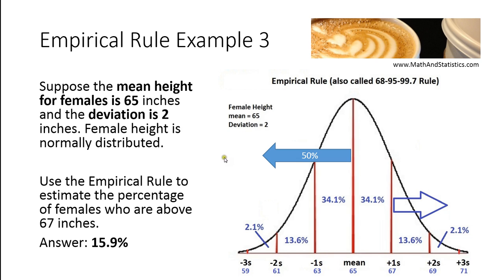So these are the things you can do with the empirical rule. The empirical rule always gives you an estimate of the area under the curve, the percentages, or the probabilities. In our next video, we're going to look at using the z-table to get exact values rather than estimating them with the empirical rule. Thank you so much for joining me.